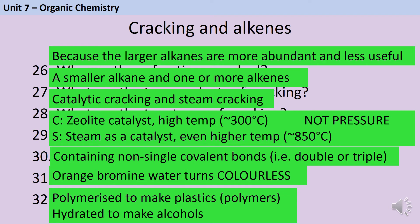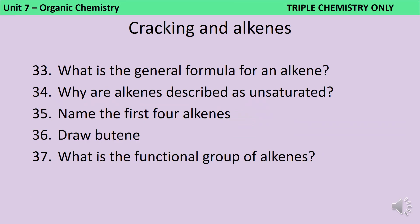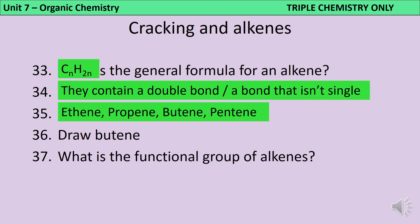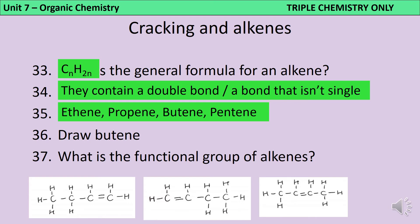Alkenes are used to make plastics by being polymerised, and they can also be hydrated to make alcohols. The general formula for alkenes is CnH2n. Alkenes are described as unsaturated because they all contain one double covalent bond. The first four alkenes are ethene, propene, butene and pentene. Butene contains four carbon atoms bonded together and one double covalent bond — make sure each carbon is making four bonds in total, remembering the double bond counts for two. The functional group of alkenes is the carbon-carbon double bond.